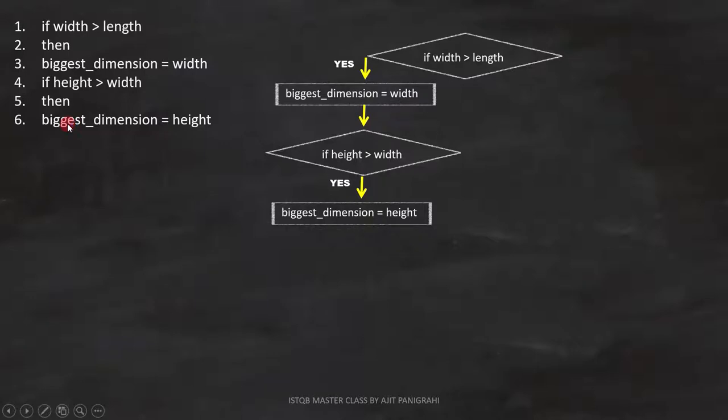Now the seventh, eighth, and ninth lines are important. Listen to me carefully. In the seventh line, we have end if. This is the end of if statement in fourth line. For your benefit, I am repeating it again.